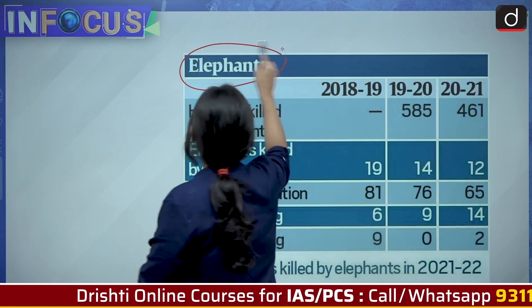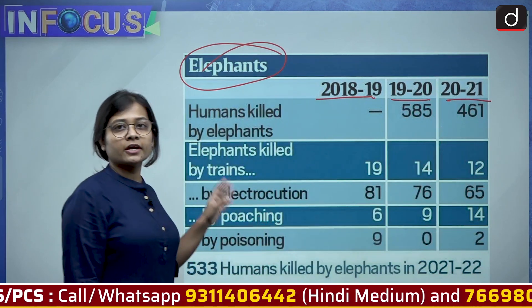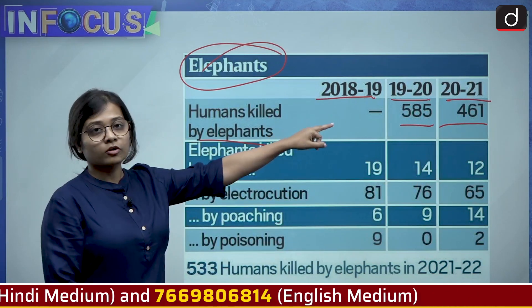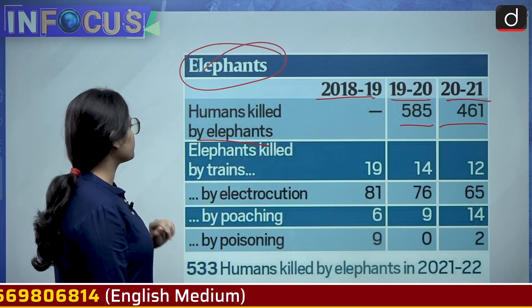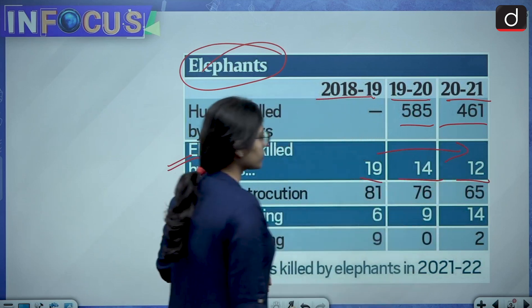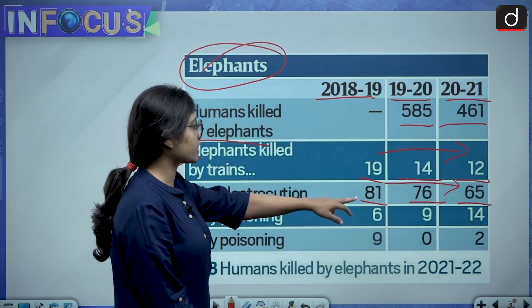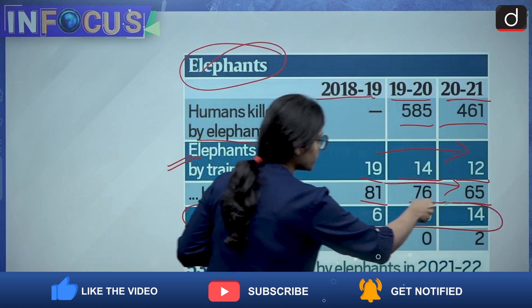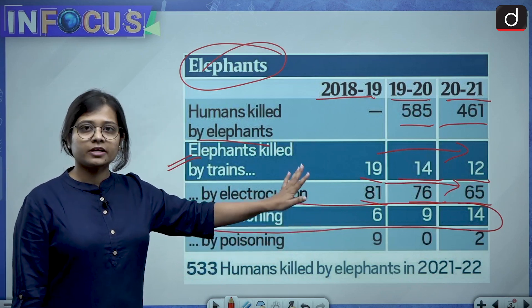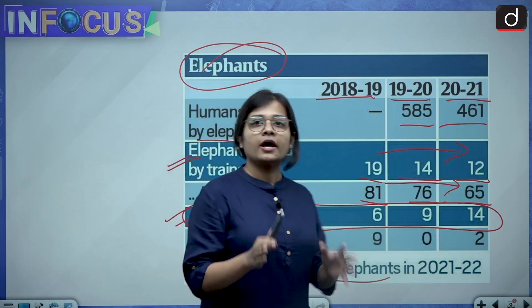Now this chart talks about elephant deaths for 2018-19, 2019-20 and 2020-21. Humans killed by elephants — 585, 461 — is decreasing. Elephants killed by trains: 19, 14, 12 — also declining. Elephants killed by electrocution: 81, 76, 65 — declining. Elephants killed by poaching: 6, 9, 14 — this is increasing. So the key point is that elephant deaths by poaching are increasing. Around 533 humans were killed by elephants in 2021-22.